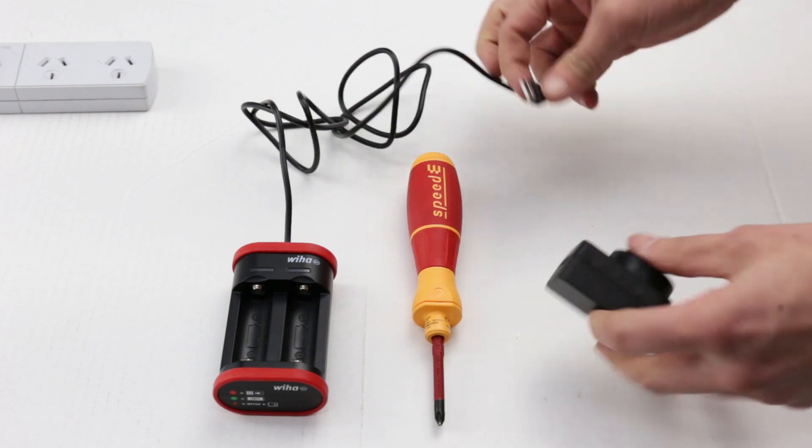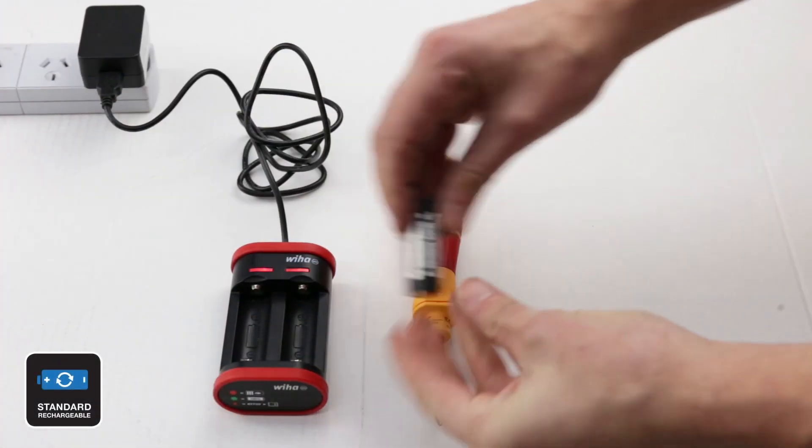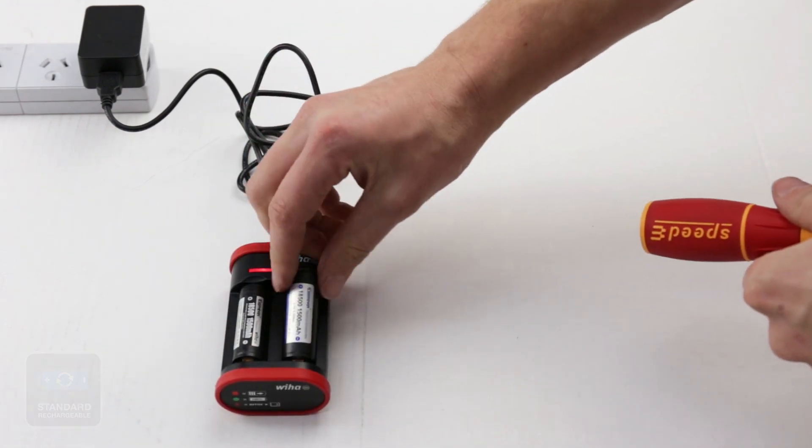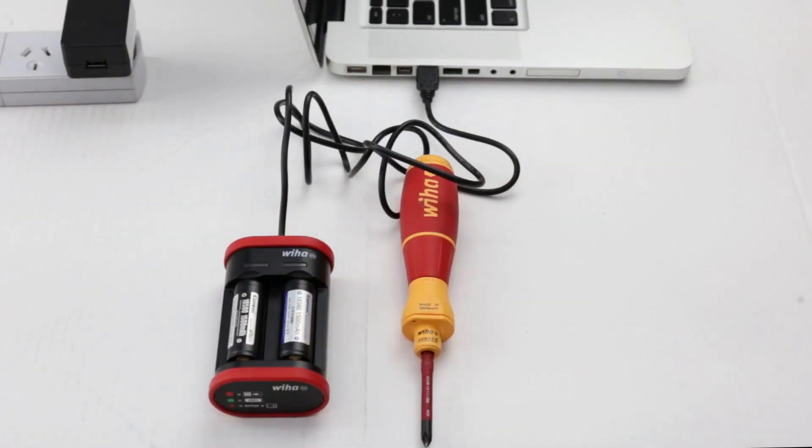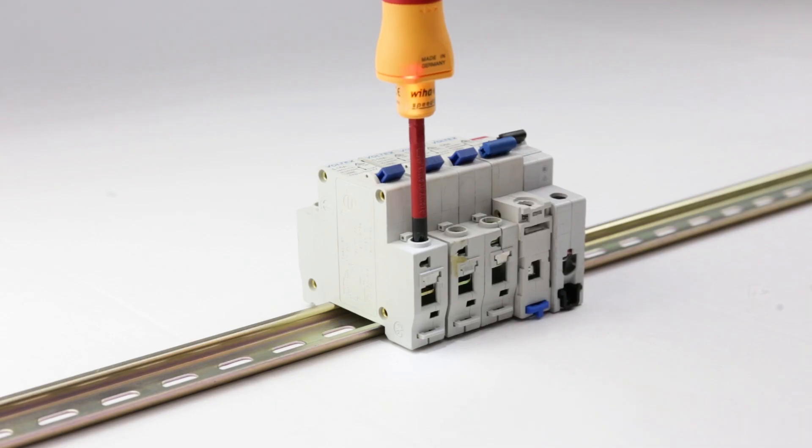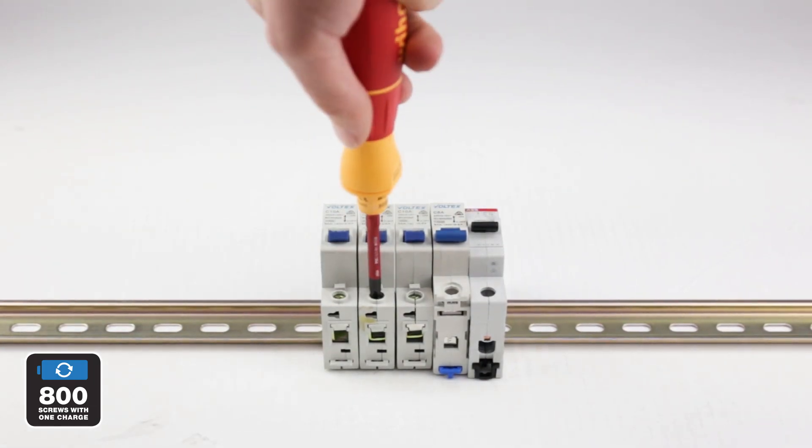Included in every Wiha Speed E kit are two 1500 milliamp rechargeable batteries, meaning you're always ready to work on the go. Plug into 240 volt while you work or charge on the go via USB. Each lithium-ion rechargeable battery includes a massive 800 screw fastenings per charge.